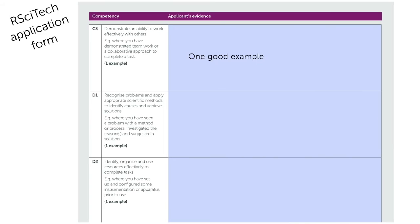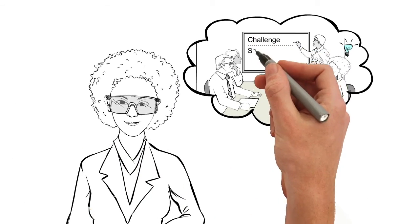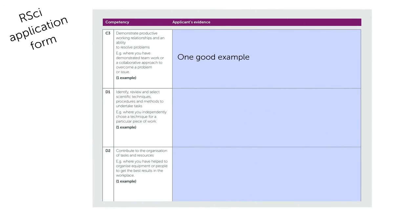And scientist applicants are asked to show how they've helped design a procedure and then used it to solve a problem. But remember, for each competency, all we need is one concise example.